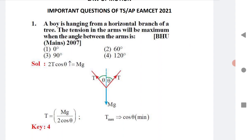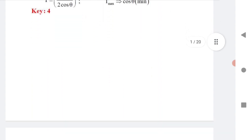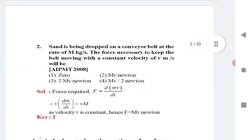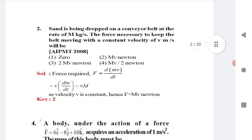Question 1: A boy is hanging from a horizontal branch of a tree. The tension in the arm will be maximum when the angle between the arms is — the answer is 120 degrees.